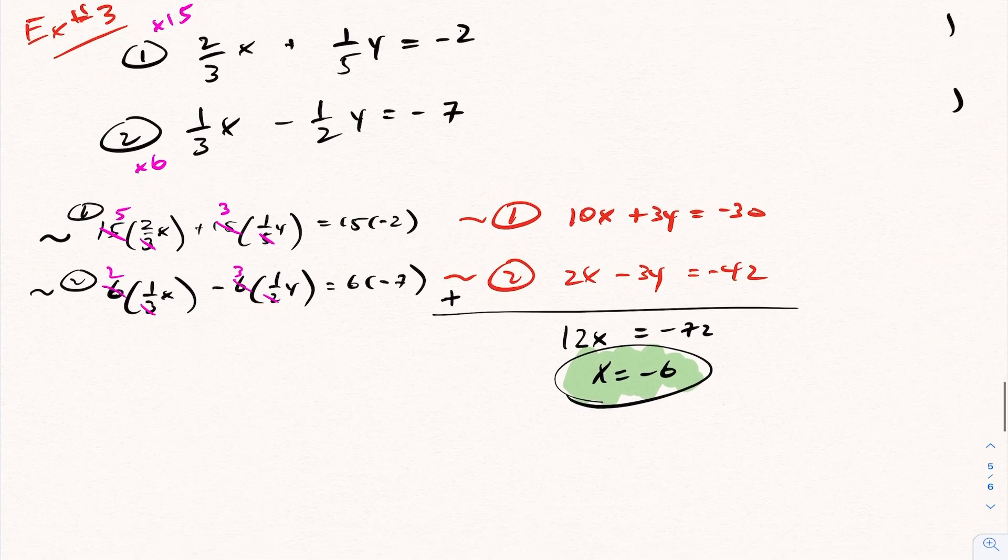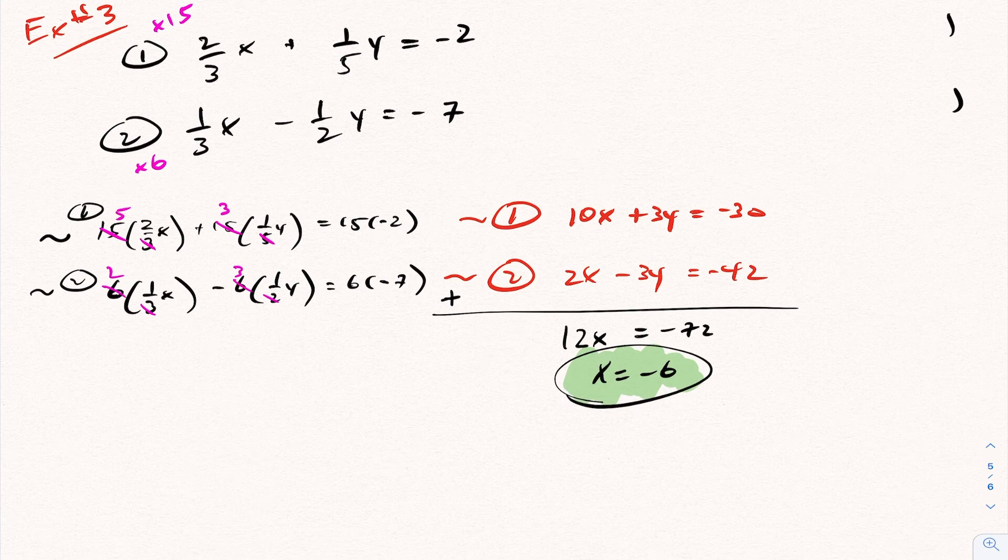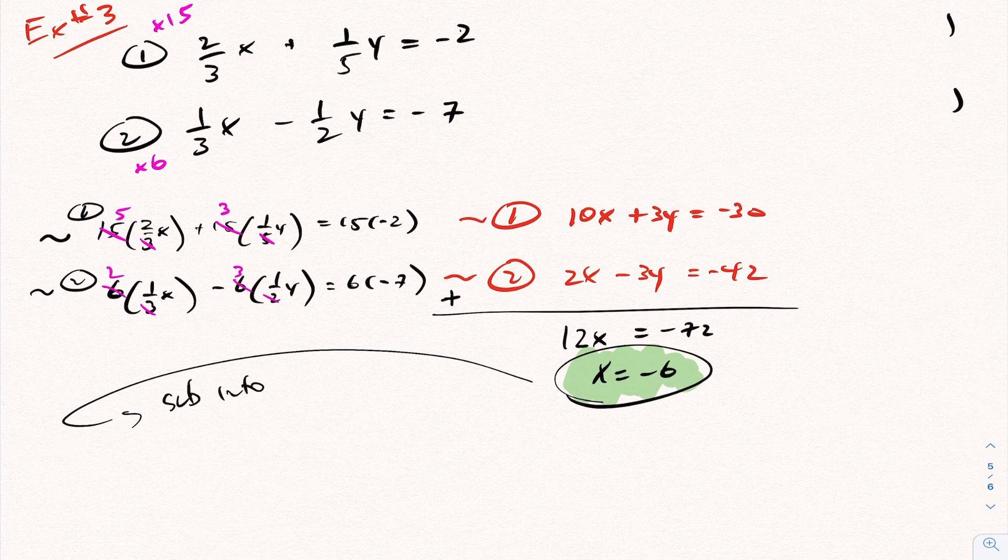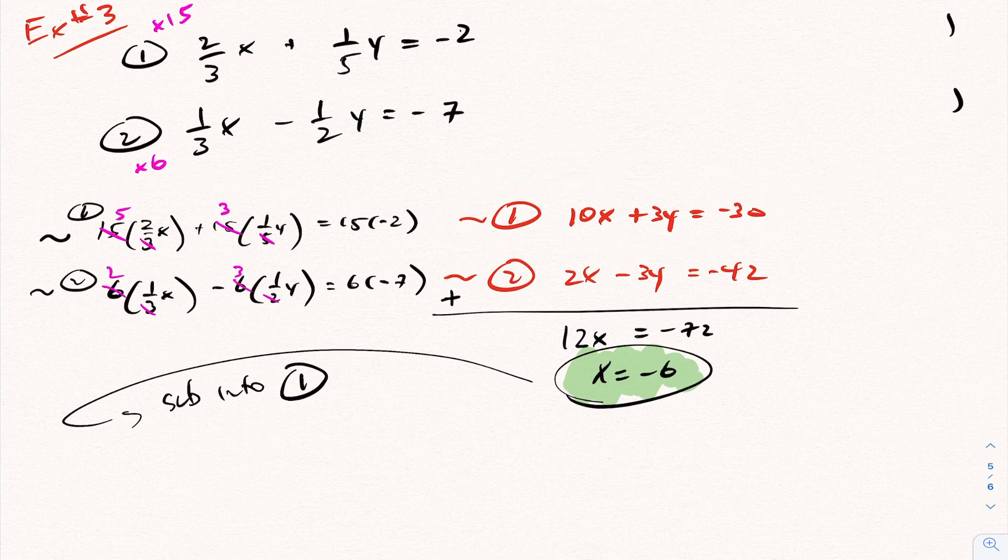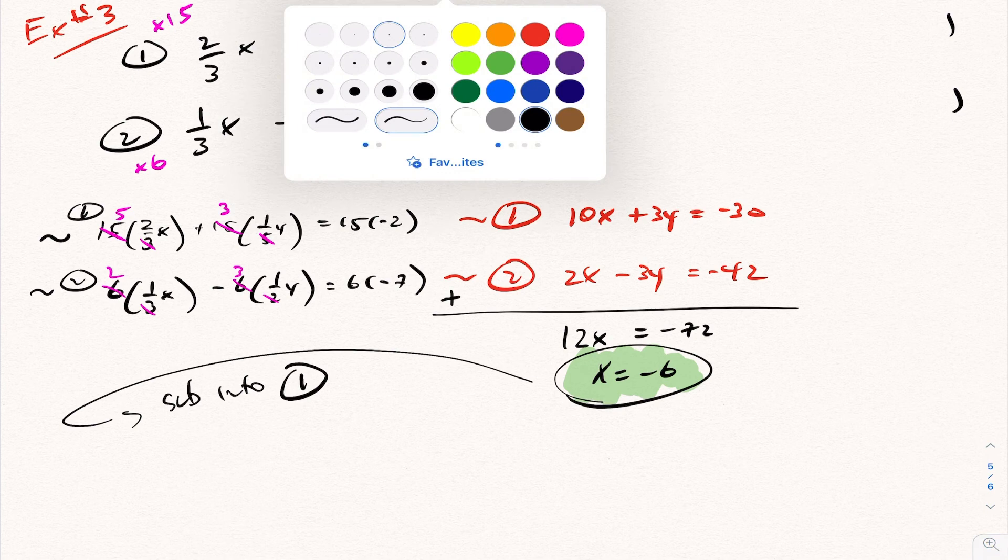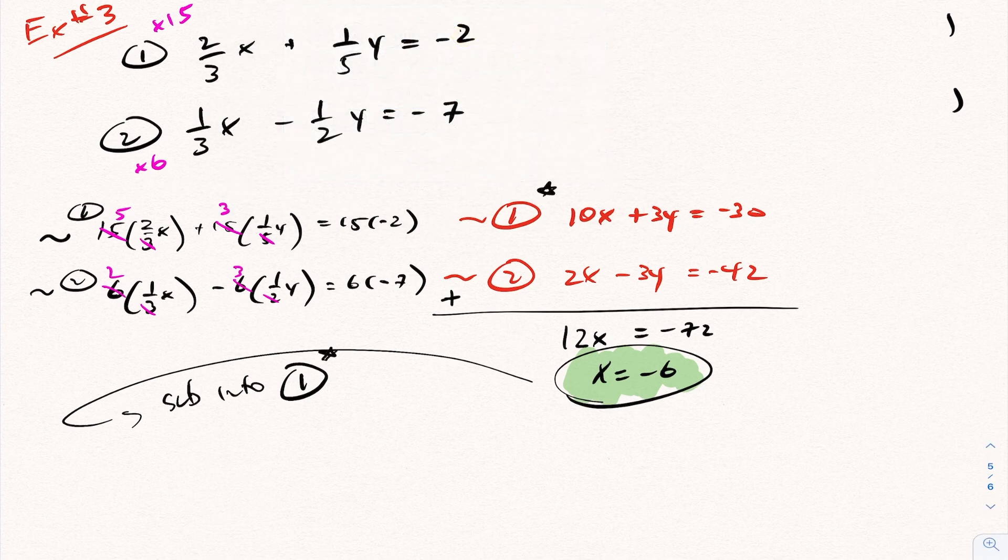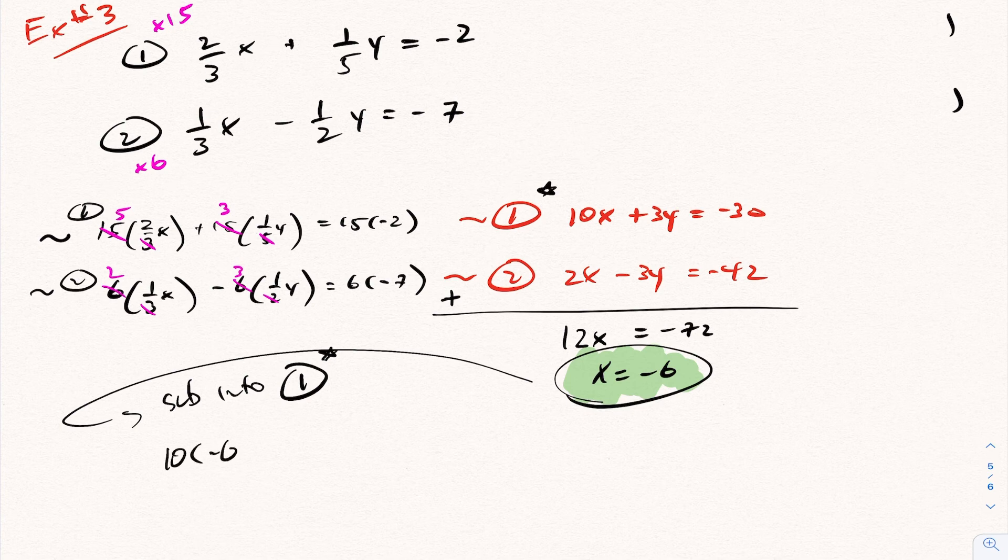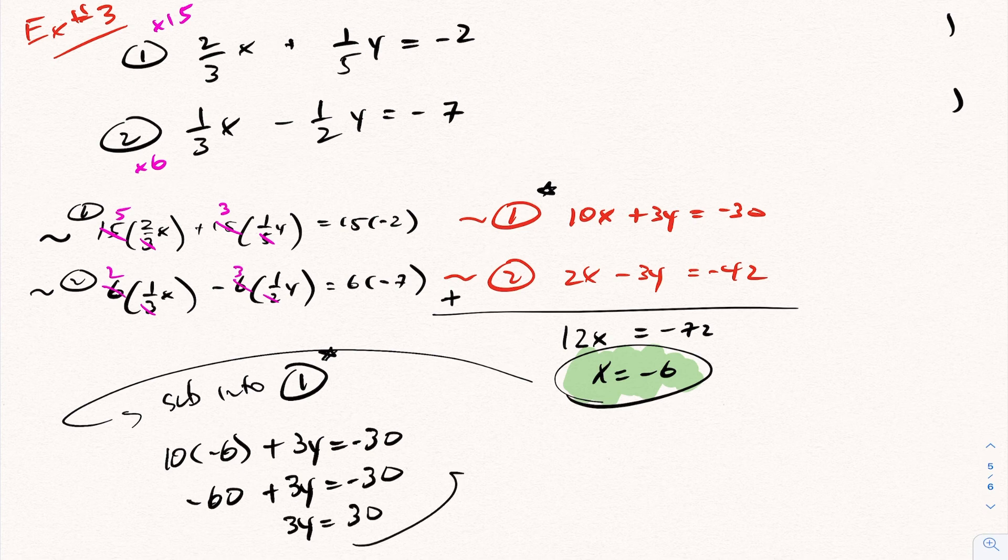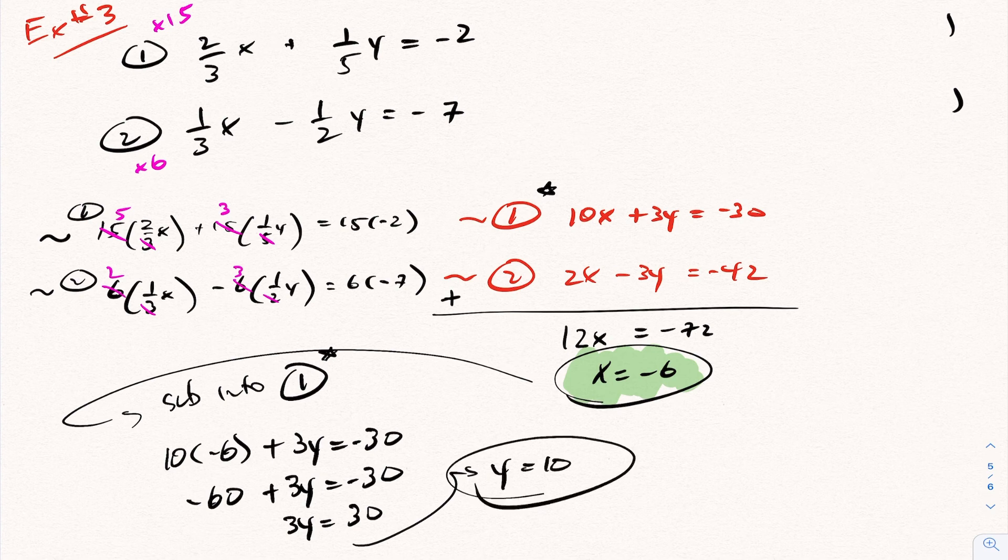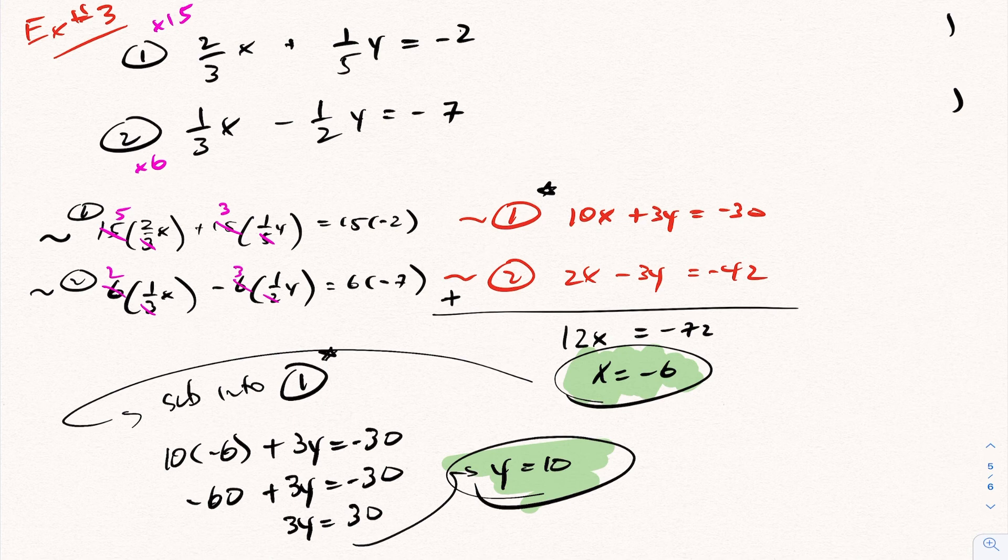So now I've got my x value is negative 6, so now I can sub that into either equation. Now notice here you don't have to sub it into your fraction equation, you can sub it into your adjusted equation. I'm going to sub that into equation 1, we'll call this 1 star. So in which case this is 10 times negative 6 plus 3y is negative 30. This becomes negative 60 plus 3y is negative 30. And you're just solving for y here. And putting this together, your point of intersection, by alphabetical order, is negative 6 and 10.